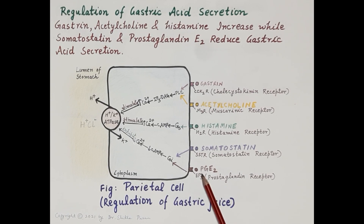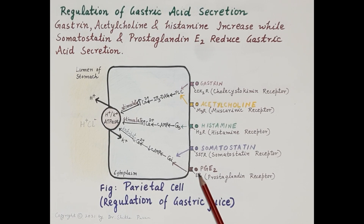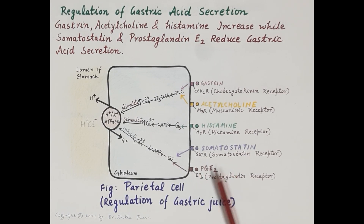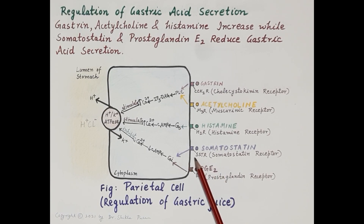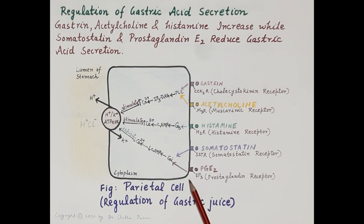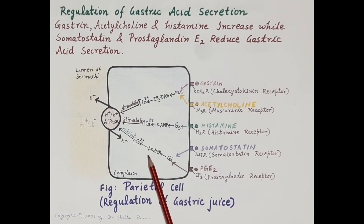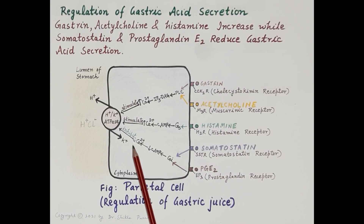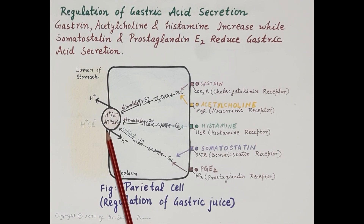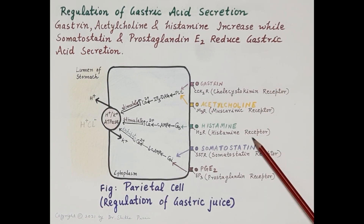Prostaglandin is produced by the mucosal epithelial cells of the stomach. Both somatostatin and prostaglandin E2 bind to receptors on the parietal cells — somatostatin binds to SST receptors, while prostaglandin E2 binds to EP3 receptors. They stimulate the G-inhibitory pathway, reducing cyclic AMP and causing a fall in intracellular calcium concentration, thereby inhibiting the hydrogen-potassium ATPase pump and reducing secretion of hydrochloric acid.